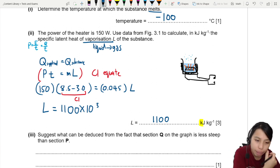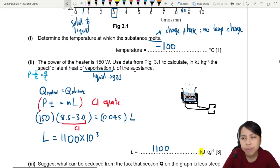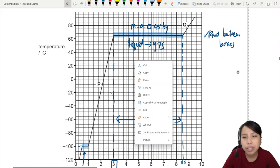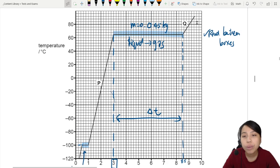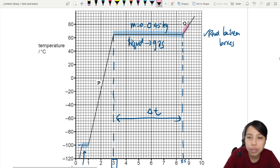Last part. Suggest what can be deduced from the fact that section Q of the graph is less steep than section P. Less steep. Q is less steep. So you look at the gradient of Q. Let's highlight those. These are the sections where there is an increase in temperature.